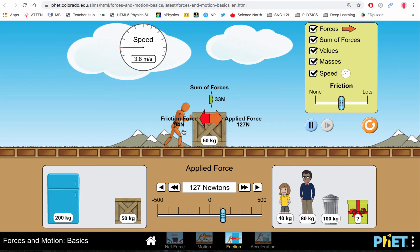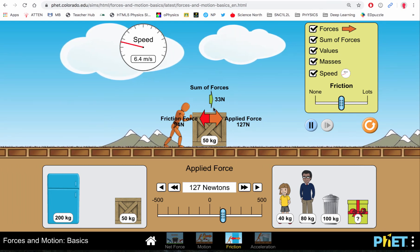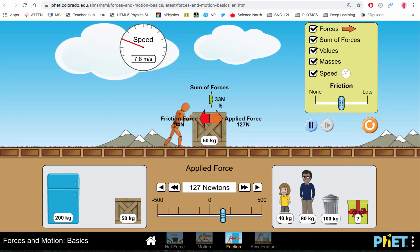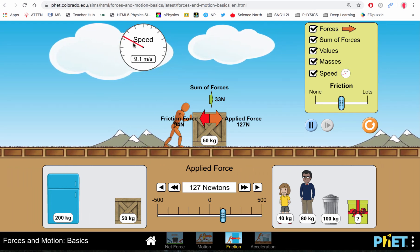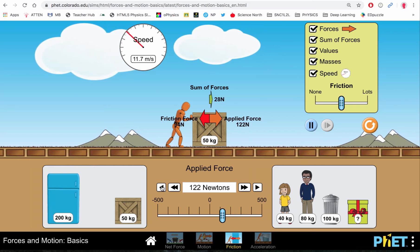So now you'll notice that we have an applied force of 127 Newtons, the frictional force is only 94 Newtons, giving us a sum of or net force of 33 Newtons. And you'll notice that the speed is increasing, so we're undergoing acceleration.